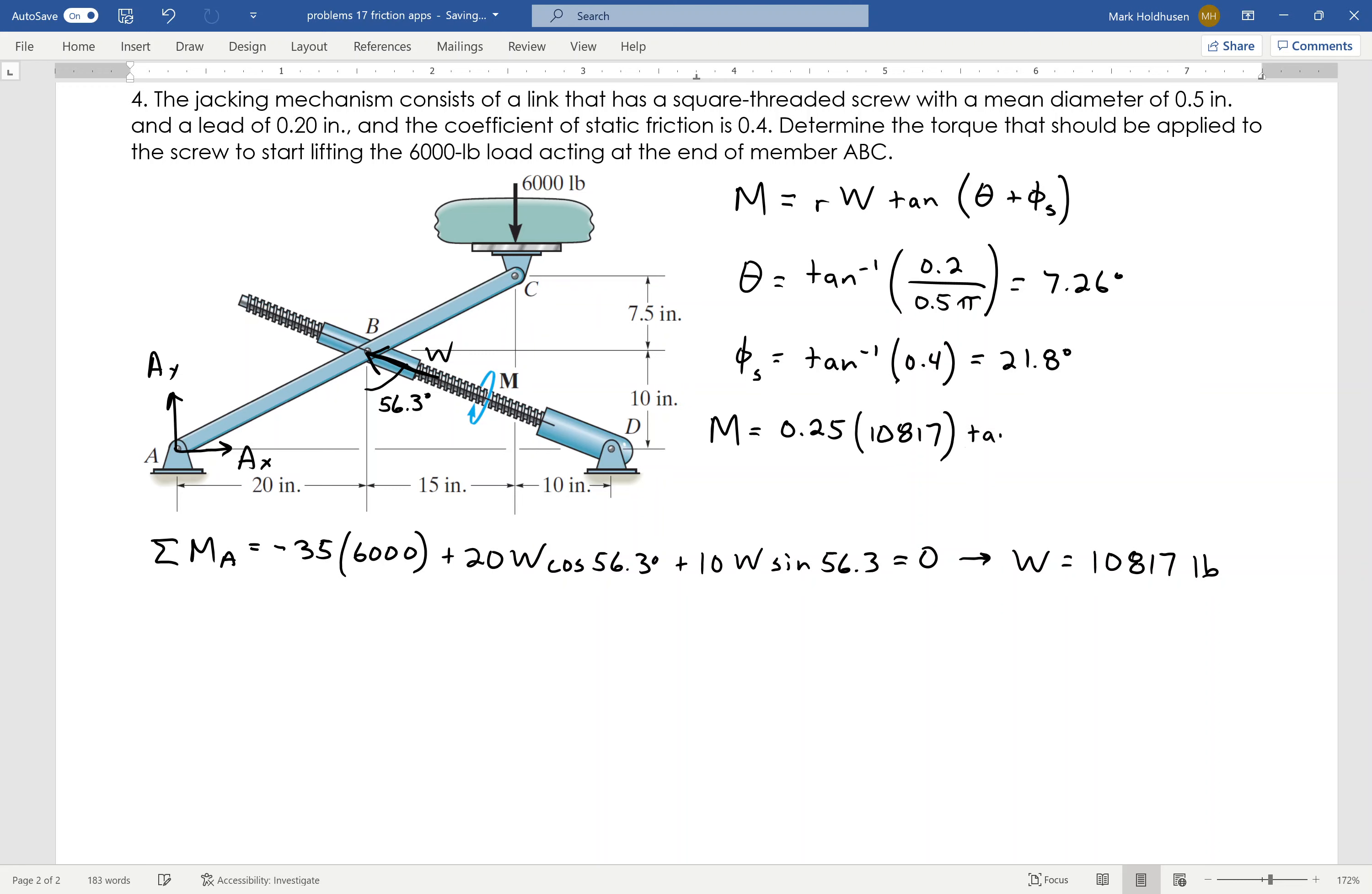And then it'll be the tangent of 7.26 plus 21.8. Add those two together to find your moment. And the moment necessary to get this thing to move up is 1502 pound-inches.